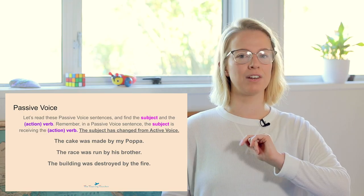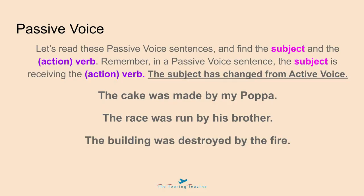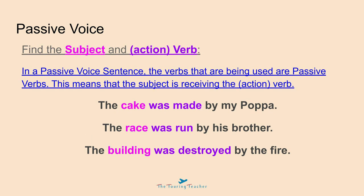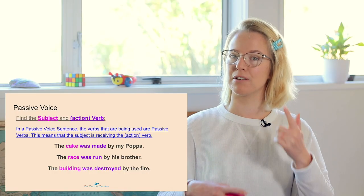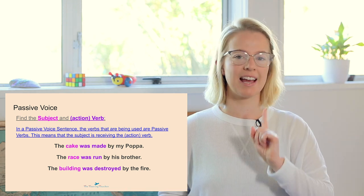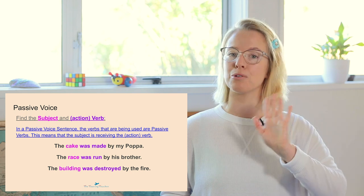Pause the video and see if you can find the subject and the verb. In a passive voice sentence, the verbs used are passive verbs, meaning the subject is receiving the action. The cake is now the subject; was made is the verb. Race is the subject; was run is the verb. Building is the subject; was destroyed by the fire is the verb phrase. You can see that the subject has changed from the active voice sentence when reworded as passive voice.